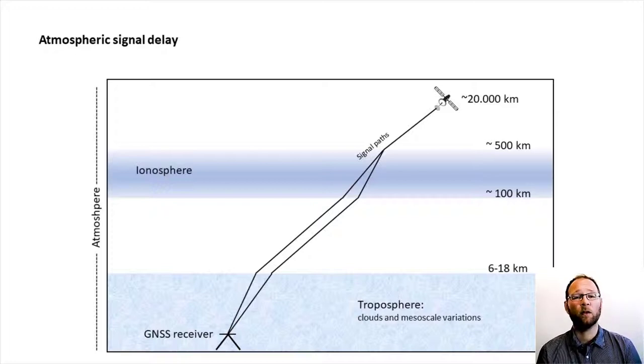The key to solving for the atmosphere is to use both the L1 and L2 frequencies broadcast by the satellites. Hence, geodetic quality instruments are often called dual frequency receivers.